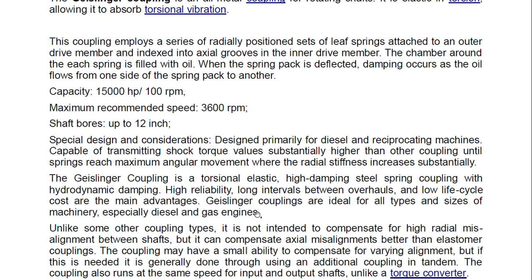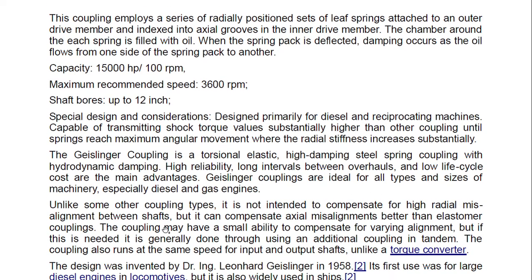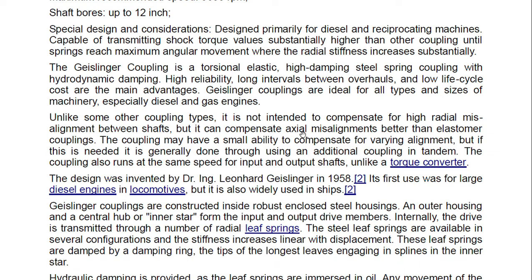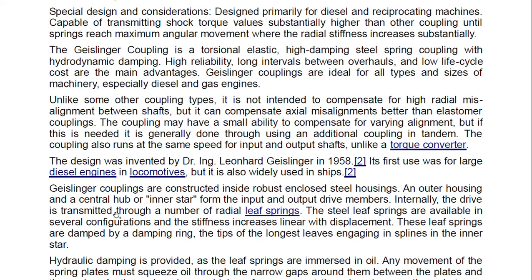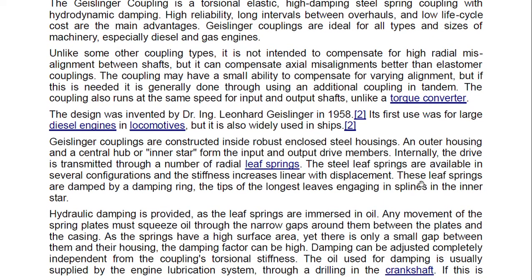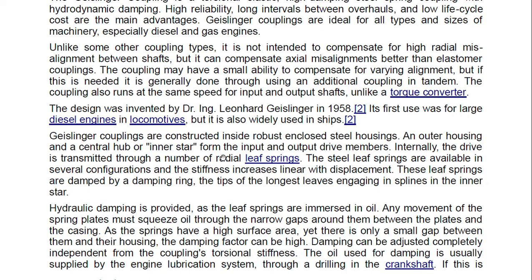The Geislinger coupling is ideal for all types and sizes of machinery, especially diesel and gas engines. Unlike some other couplings, it is not intended to compensate for high radial misalignment between shafts, but can compensate axial misalignment better than elastomer couplings. The coupling runs at the same speed for input and output shafts, unlike a torque converter. Internally, the drive is transmitted through a number of radial leaf springs — these leaf springs are also found in turbochargers. The steel leaf springs are available in several configurations and stiffness increases linearly with displacement.